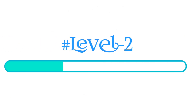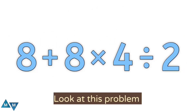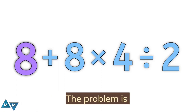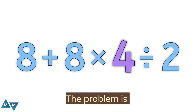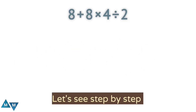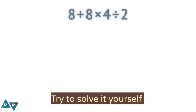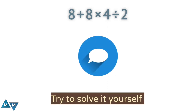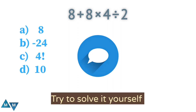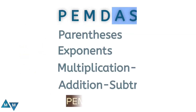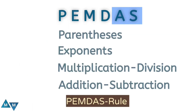Here is the second problem: eight plus eight times four divided by two. Let's see step by step how to solve it. But first, try to solve it yourself and comment below which of the following options is correct. Here we can use PEMDAS rule to solve this expression because it tells us the sequence in which the mathematical expression should be evaluated to ensure accurate results.